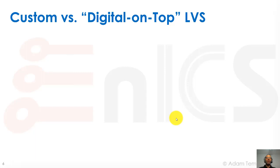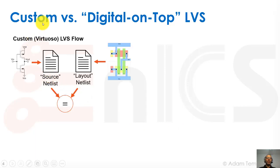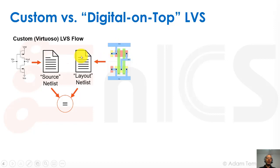Many of you may have done custom design LVS. If you use Virtuoso, for example, in a custom LVS flow, you draw your transistors in the schematic editor, run netlisting to provide the LVS tool with a source netlist, then do layout in the layout editor, run extraction to provide the layout netlist, and compare the two. Usually this is done with a UI or a plugin like Calibre into Virtuoso — you press a button and everything runs in the background, giving you the LVS report at the end.